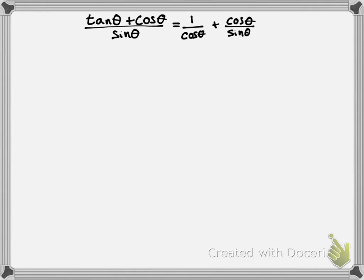Hey everyone. So I figured you might benefit from seeing a video of me thinking through a trigonometric identity. So we're going to look at this one here. We need to prove that tangent of theta plus cosine of theta divided by sine of theta equals 1 divided by cosine of theta plus cosine of theta divided by sine of theta. I'm also going to vocalize the thought process I'm going through here.